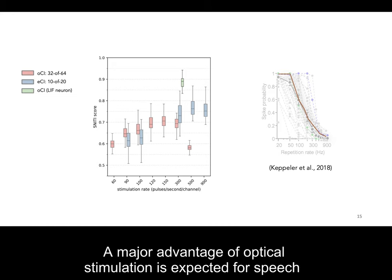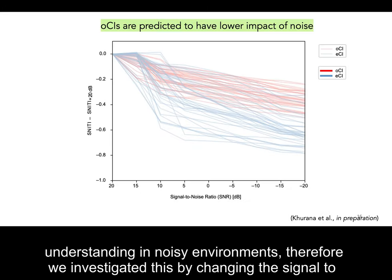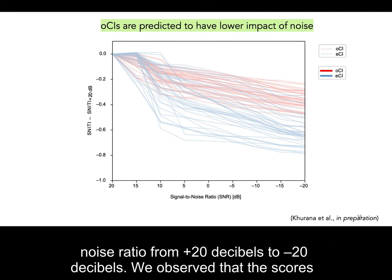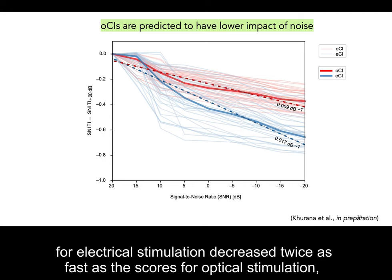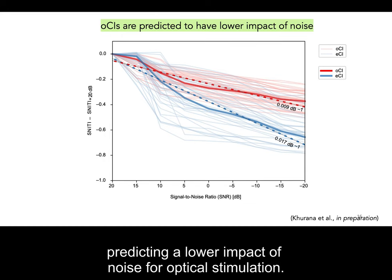A major advantage of optical stimulation is expected for speech understanding in noisy environments. Therefore, we investigated this by changing the signal-to-noise ratio from plus 20 decibels to minus 20 decibels. We observed that the scores for electrical stimulation decreased twice as fast as the scores for optical stimulation, predicting a lower impact of noise for optical stimulation.